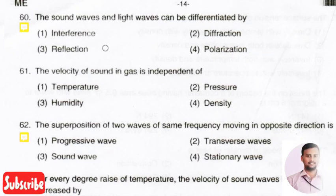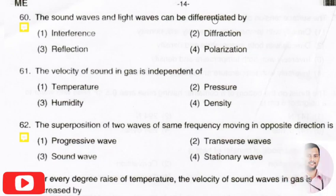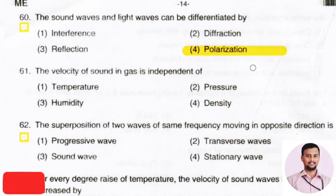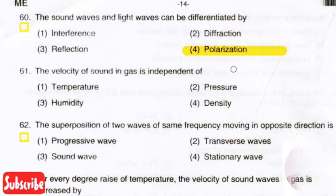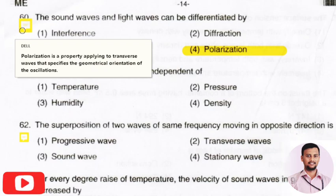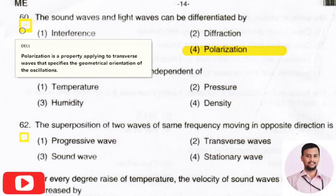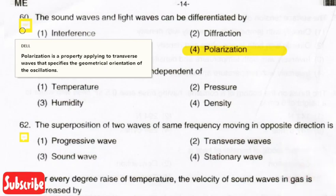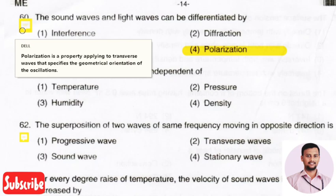The next question: sound waves and light waves can be differentiated by? The right answer is option 4, that is polarization. Polarization is a property applying to transverse waves that specifies the geometrical orientation of the oscillations. Sound waves and light waves are differentiated with the help of polarization.